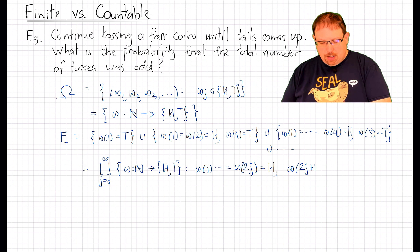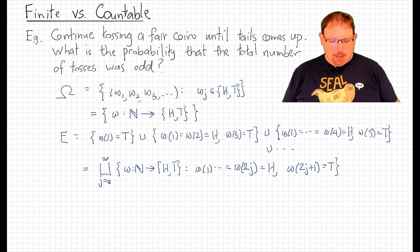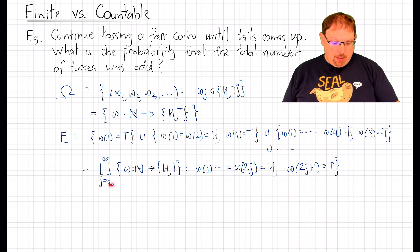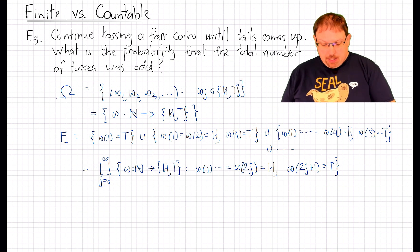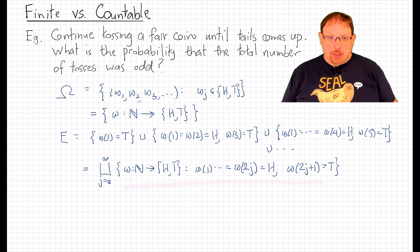but the 2j+1th toss is tails. Now you'll notice that I've used this square U to indicate disjoint union. Indeed, these events are all disjoint from each other.